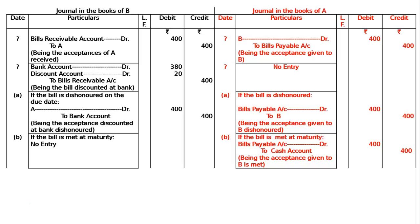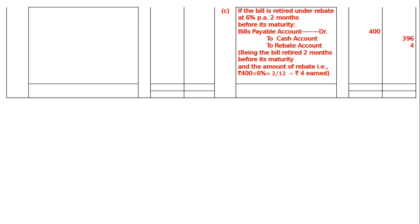Case 3 — Retired under rebate at 6% per annum, 2 months before maturity. The bill tenor was 3 months and it was retired after 1 month, so the rebate is calculated for 2 months. In the books of A: Bills Payable account debited Rs.400, to Cash account Rs.396 and Rebate account Rs.4, being the bill retired 2 months before maturity. The rebate amount is Rs.400 at 6% for 2 months = Rs.4.